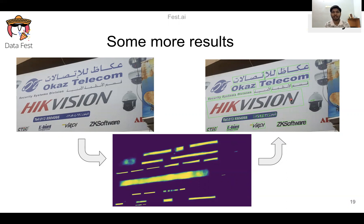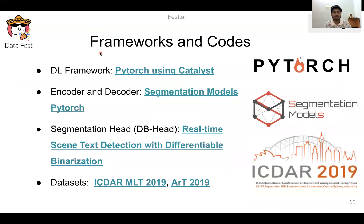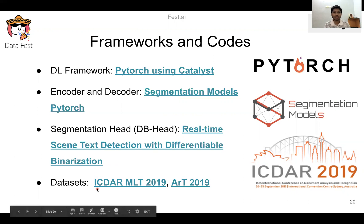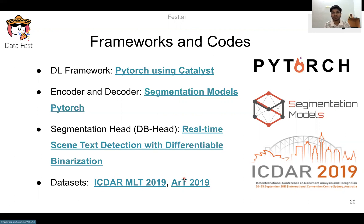This gives us significantly better performance than previous existing methods. The frameworks used are PyTorch with Catalyst as a high-level framework. The encoder-decoder is from Segmentation Models PyTorch, available on GitHub, and for the segmentation head we use a real-time text detection model from AAAI 2020. The datasets used are ICDAR MLT (Multilingual Text Detection dataset) 2019, containing 10,000 training images, and ArT 2019 (Arbitrary-shaped Text dataset), containing around 6,000 training images.